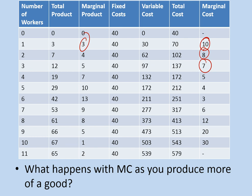What happens to marginal cost as you produce more of a good? Well, it goes down and down, but then at a certain point it starts to go up again. This is similar to the production possibilities curve — as you try to produce more of a good, it gets more difficult. At the point where we have seven workers, they're filling all the spaces, so you're getting less output from each additional worker, marginal product is going down, and workers are less efficient.